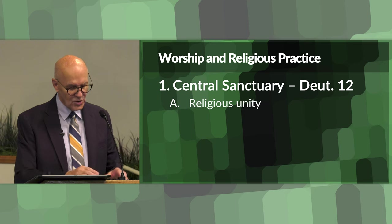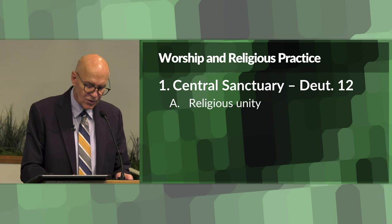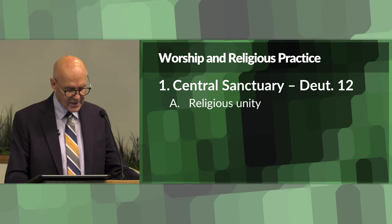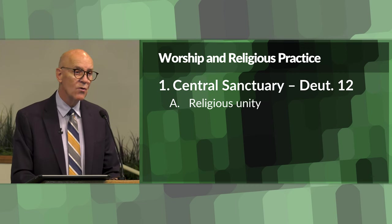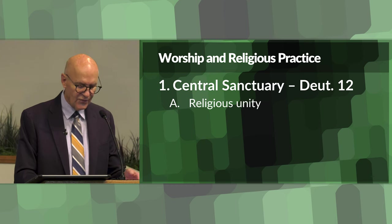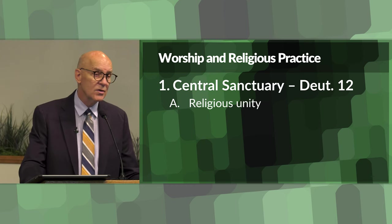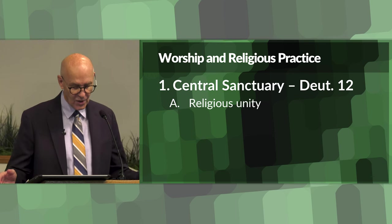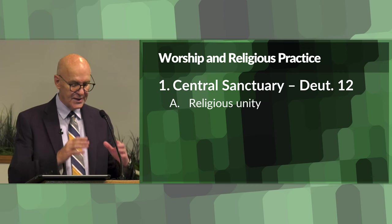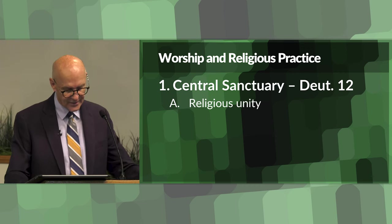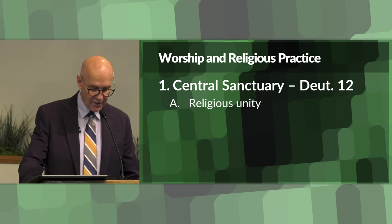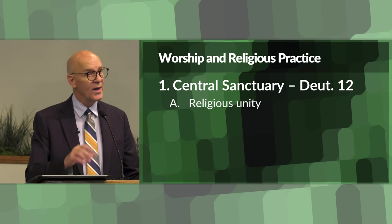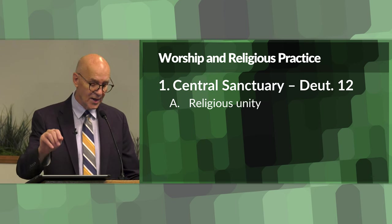There are three main categories and 18 different ordinances or laws. The first category is worship and religious practices. The first item is the central sanctuary in Deuteronomy 12. The idea here is that worship and sacrifices must only be performed at the location that God Himself has chosen, centralizing worship to maintain religious unity and to prevent idolatry.